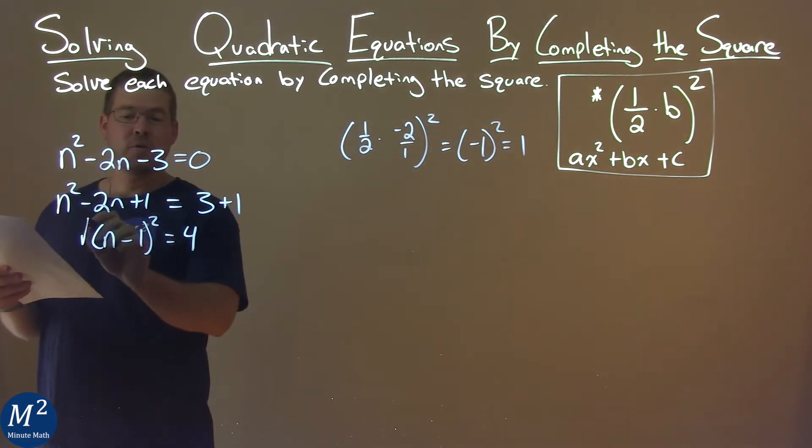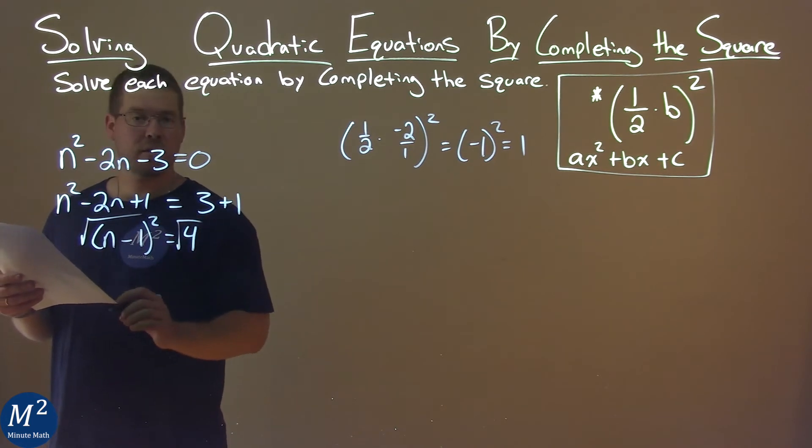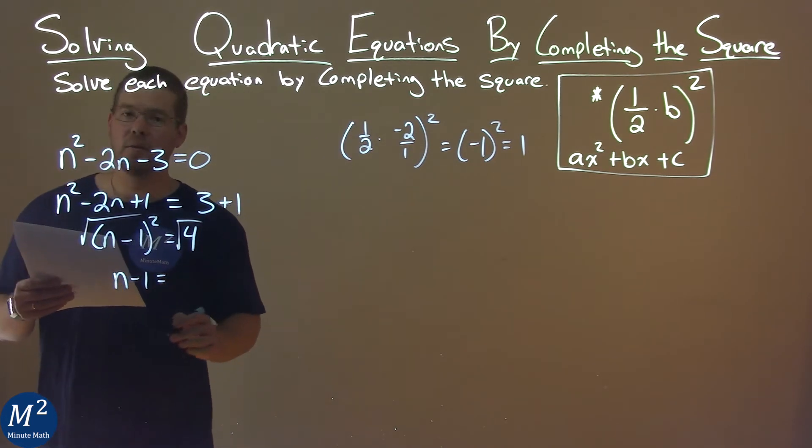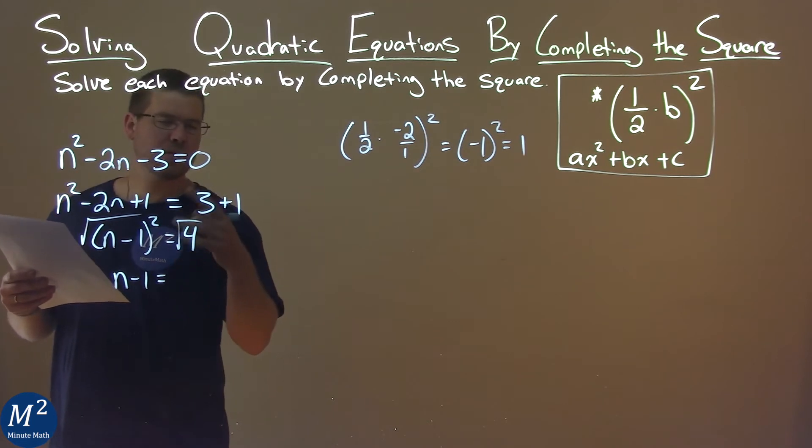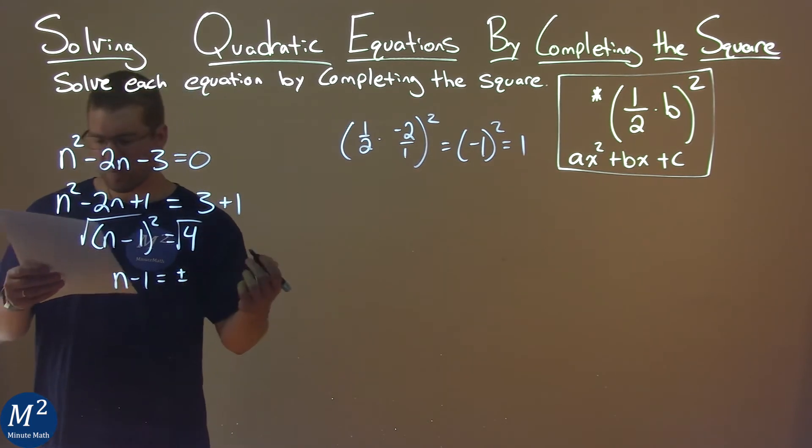Now I can take the square root of both sides, which eliminates the square on the left. n - 1 is on the left, and on the right, the square root gives us plus or minus. The square root of 4 is 2.